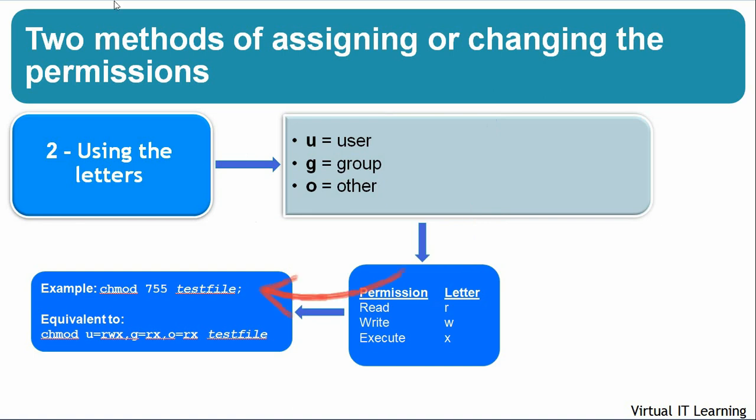Here is an example of 755 permissions set on a file using this method. Using letter mode, 755 would be equivalent to: read, write, and execute permissions to the owner; read and execute permissions to the group; and read and execute permissions to others. So this command in letter mode would be equivalent to chmod 755 in numeric mode.